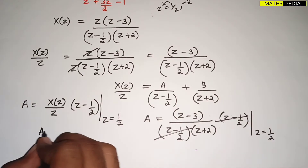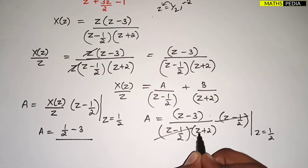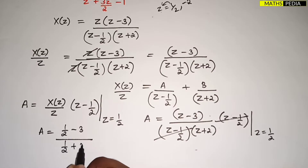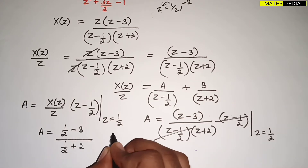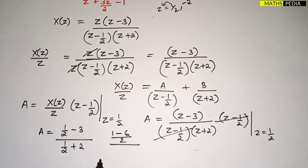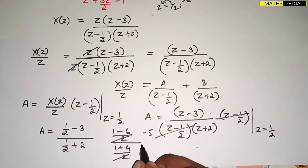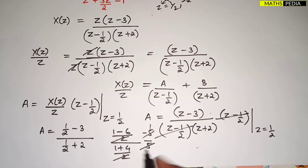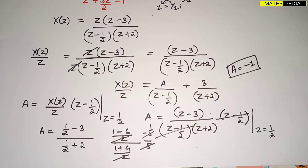Substituting Z = 1/2: A = (1/2 - 3)/(1/2 + 2). Taking LCM: numerator = (1 - 6)/2 = -5/2, denominator = (1 + 4)/2 = 5/2. The 2s cancel, giving -5/5 = -1. So A = -1.